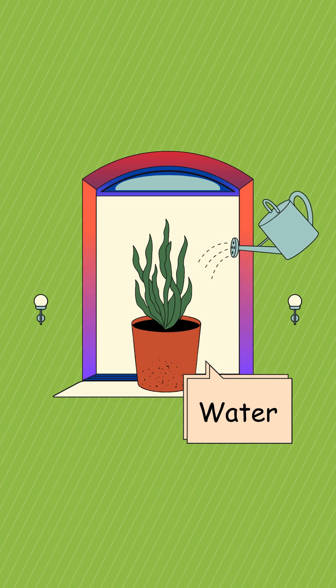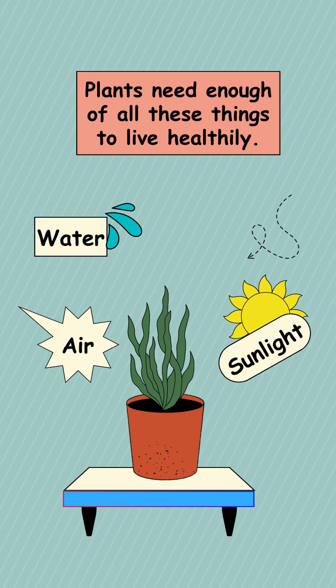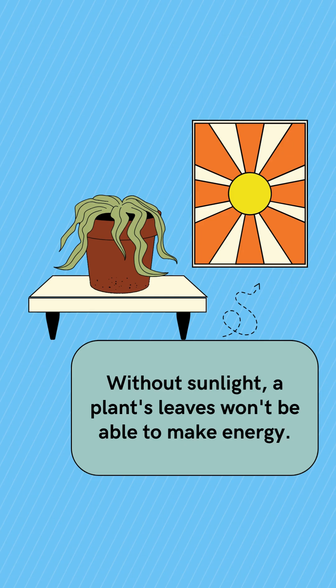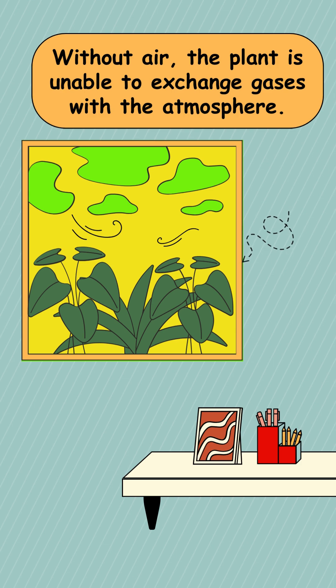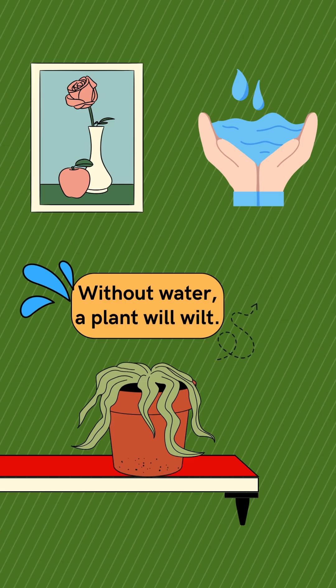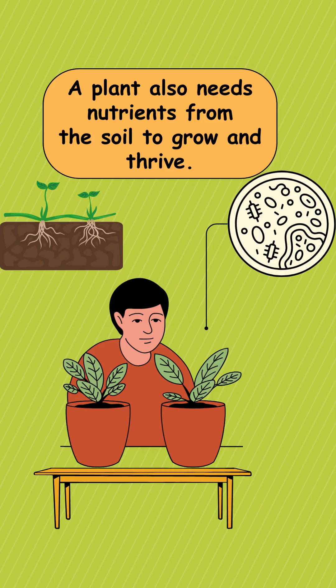Plants need enough of all these things to live healthily. Without sunlight, no energy. Without air, no gas exchange. Without water, the plant will wilt. A plant also needs nutrients from the soil to grow and thrive.